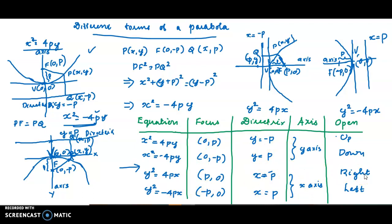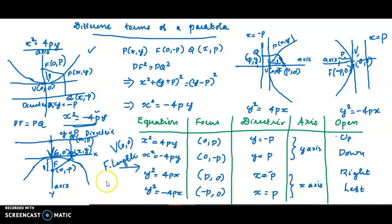There are four standard forms, all having vertex (0,0) and focal length p. That is all — the focal length equals p for all four forms.